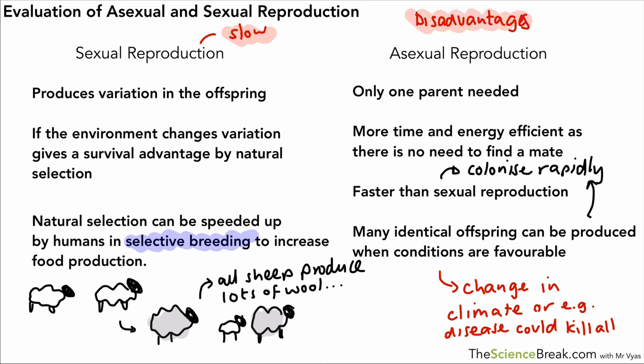The disadvantages are shown in red and the advantages are listed on both sides of the screen — that's basically an overview of the advantages and a couple of disadvantages of sexual and asexual reproduction. That's it for this video, thank you for watching and I'll see you soon.